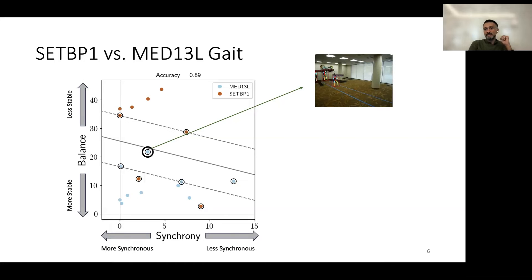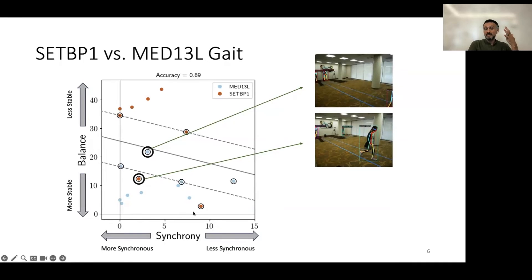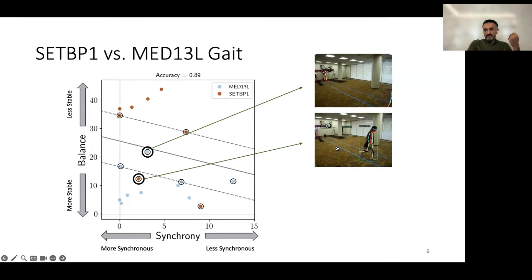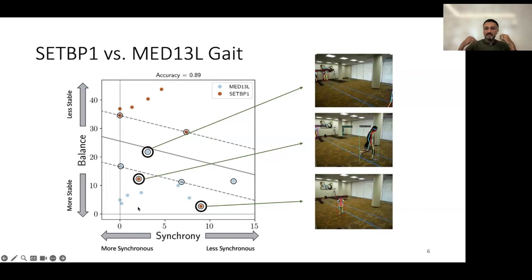So if we look at this particular MED13L participant, you can see the atypicalities in their hand movements, and a lot of swaying from left to right. And that is most likely what drives this less stable gait measurement. Then we have this participant who had a reasonable balance and reasonably synchronous gait. And you can see it from the video that that is indeed the case. And then finally, there is this kiddo who had pretty stable balance, but it is not very synchronous. And as you can see, the hands are very stiff. The arms are very stiff and close to their face.